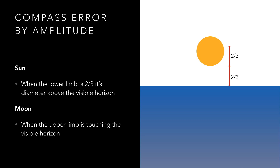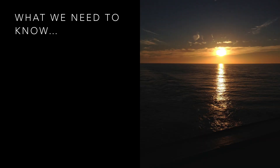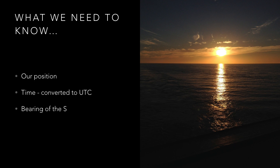As the moon is only in position for a few seconds it is normally preferable to only use amplitude for the sun. To calculate our compass error from the sun we need to know the vessel's position, the date and time relative to universal time, the observed bearing of the sun, and if we are going to calculate the magnetic compass error as well, we need to know the ship's heading by gyro and magnetic compasses.